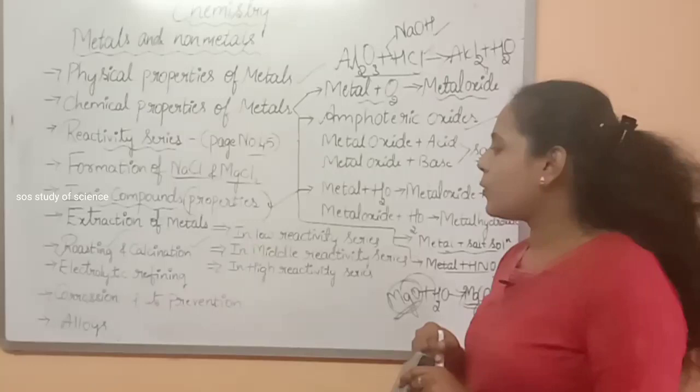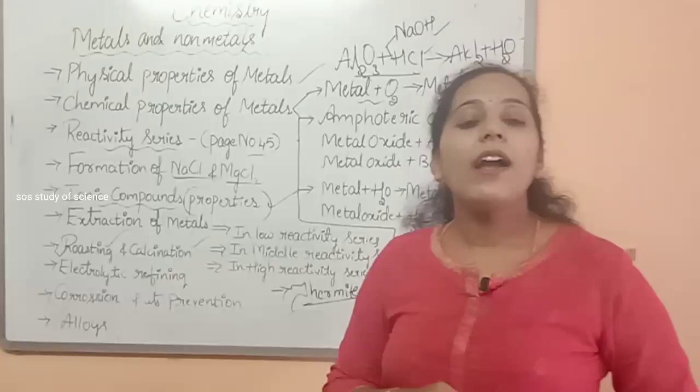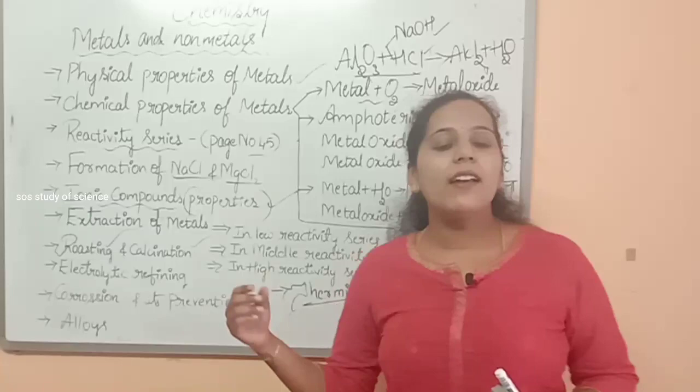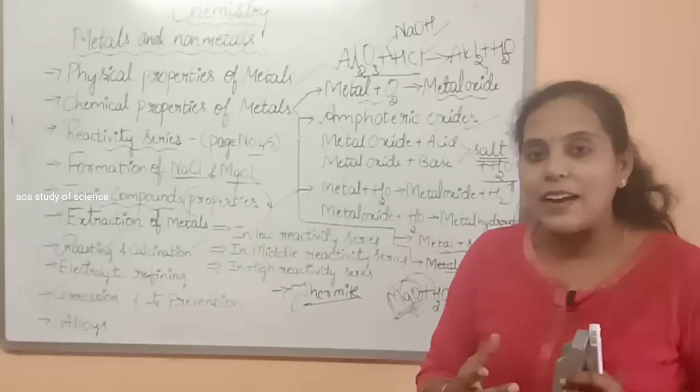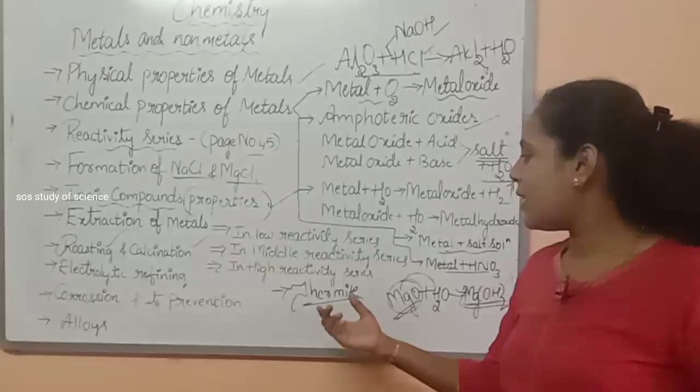Moving to the next concept: electrolytic refining. Also, I must add one more important topic — the thermite process. The thermite process is very, very important. It is basically done to join railway tracks or broken machine parts. Here, iron oxide is combined with aluminium and both are heated, giving us molten iron, which is used to join the railway tracks or broken machine parts. This process is called the thermite process.